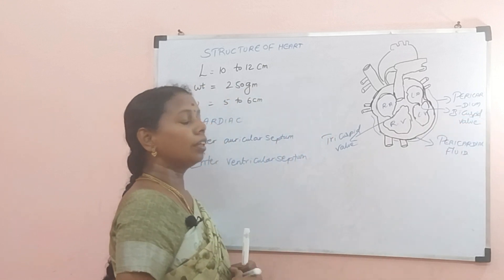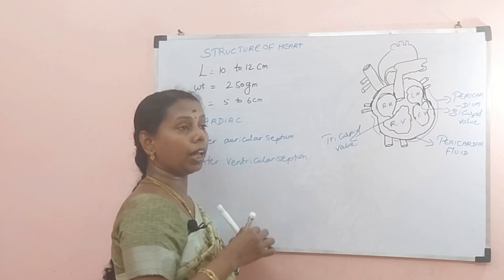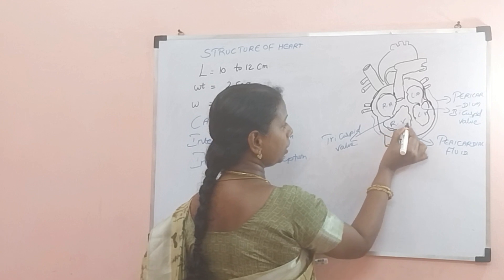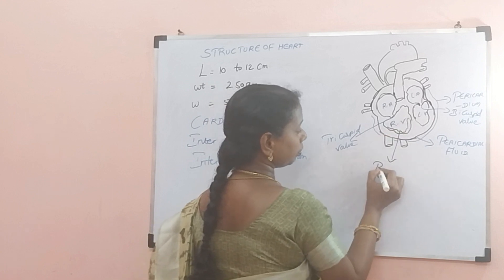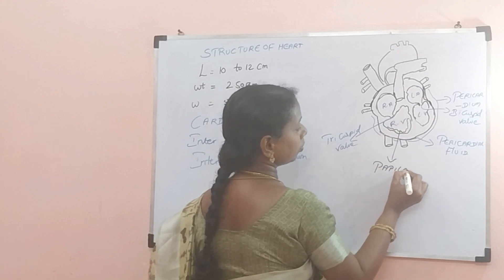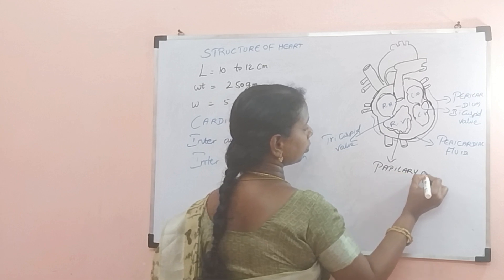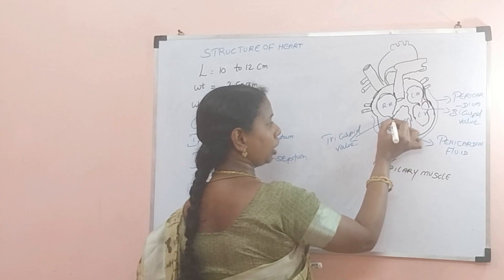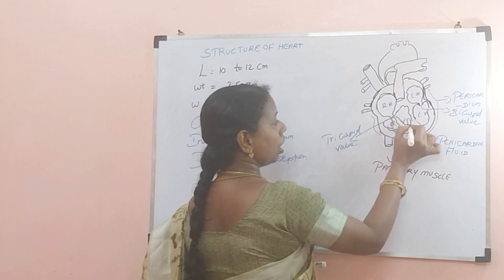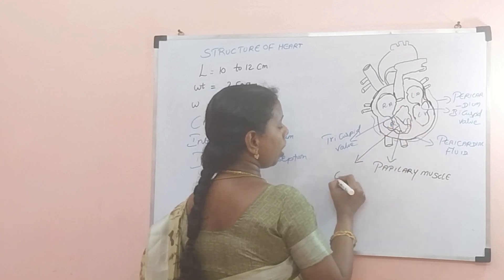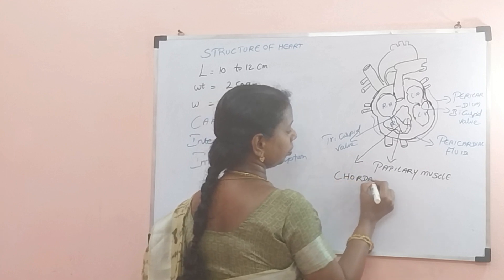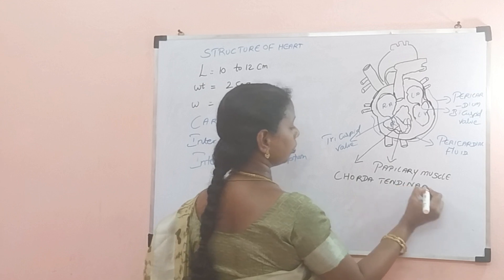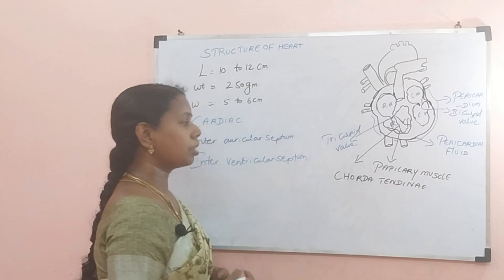There will be a connection between the valve and the ventricle. We can find some muscles here called papillary muscles. The papillary muscles and the valve are interconnected through a strip of muscle called the chordae tendineae.